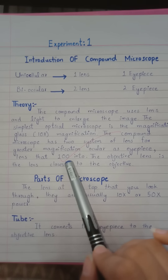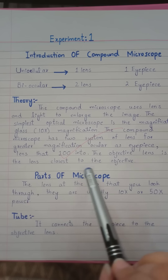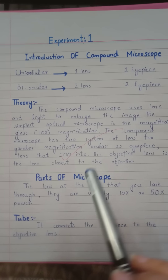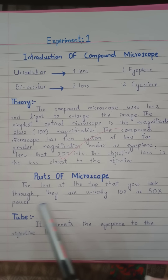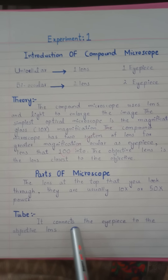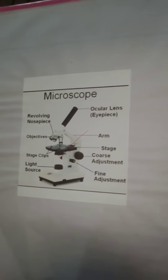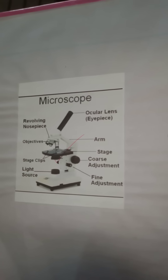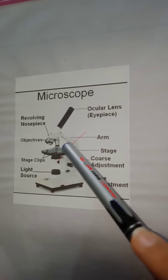The objective lens is the lens closest to the specimen. The eyepiece lens is the lens at the top that you look through — they are usually 10x or 50x power. The tube connects the eyepiece to the objective lens. This is the diagram of the compound microscope: this is the ocular lens or eyepiece, and this is the arm.